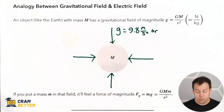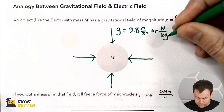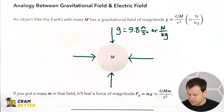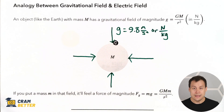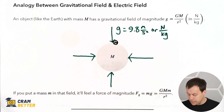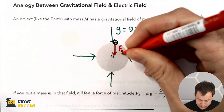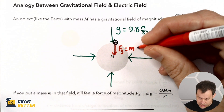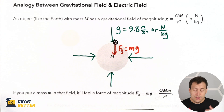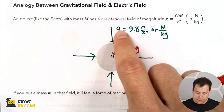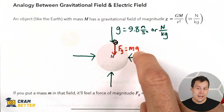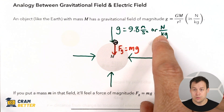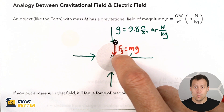Meters per second squared actually has a different way of being written: it's called newtons per kilogram. You don't see it written that way too often, but that's the same exact units. What it means is if you take a smaller mass — like if you stand on the surface of the Earth — you're going to feel a gravitational force as a result of this gravitational field. That force F_g equals your mass times little g, that gravitational field. When you take a mass and place it into a gravitational field, you get a gravitational force equal to the mass times that field. If you multiply a mass in kilograms by a number in newtons per kilogram, you end up getting newtons — that force, that weight.